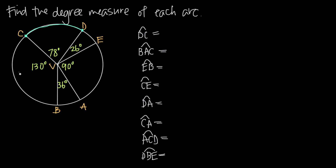Let's look at a couple of examples with this figure. We're looking for the degree measure of arc BC. If we look for point B and point C, arc BC corresponds to angle BVD. We know that the degree measure of angle BVD is 130 degrees, which means that the degree measure of arc BC is also going to be 130 degrees.